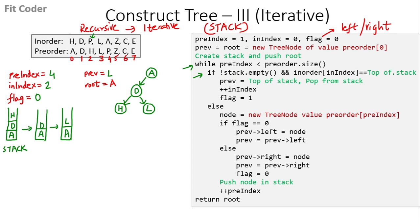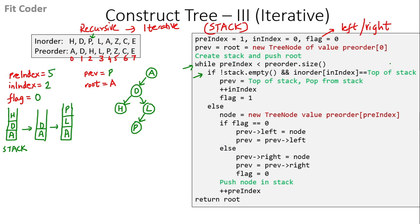In the next iteration, the top of the stack is L and the in-order index points to P — not equal. We create a new node with value P (the fourth index of the pre-order traversal). Flag is 0, so left of L points to P, and previous becomes P. We push P to the stack and increment pre-index to 5. In the following iteration, both the top of the stack and in-order index are P — equal. We set previous to P, pop from the stack, increment in-index, and set flag to 1.